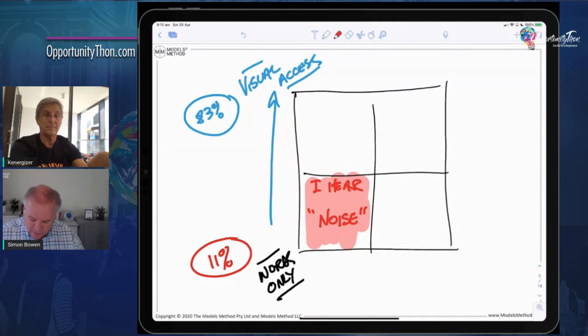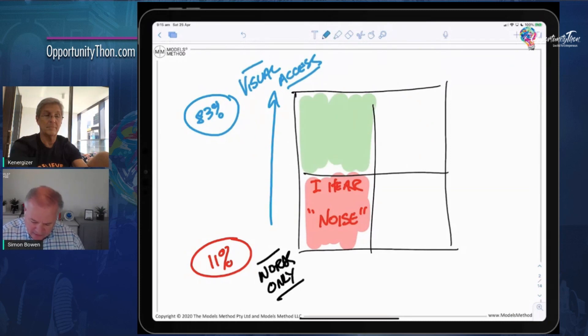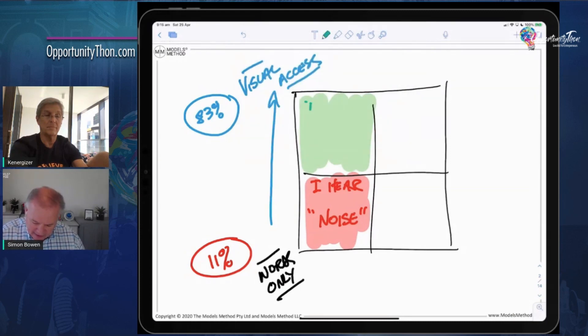And so if we can give people visual access to an idea, they say, 'Oh, I see.' And when people say 'I see,' now they say, 'Well, that's interesting.' So we've shifted from 'this is just noise' to 'this is interesting.'